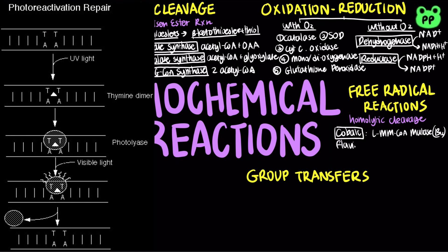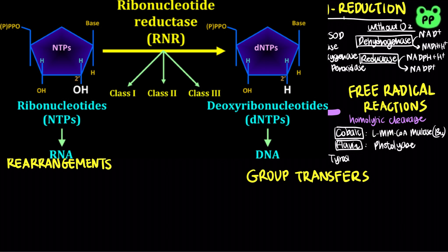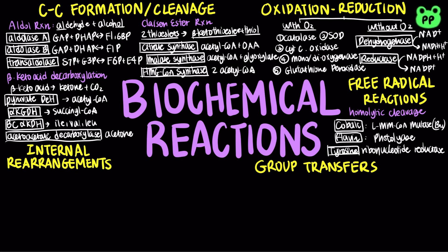Photolyases use flavin radicals to repair thymine dimers caused by exposure to UV light. Ribonucleotide reductases catalyze the formation of deoxyribonucleotides from ribonucleotides, which involves a tyrosine radical. The fourth type of biochemical reactions are internal rearrangements, which redistribute electrons without a change in the overall oxidation state of the molecule, including three main classes of enzymes.